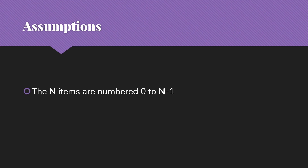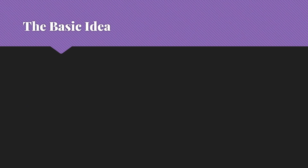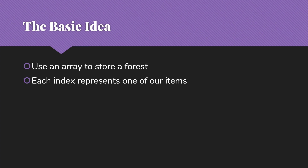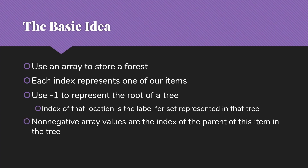We have some assumptions to make in order for this to work efficiently. We're going to have n items numbered from 0 to n-1, and we can determine the number of an item in constant time. The basic idea is that we're going to use an array to store a forest — remember that a forest is just multiple trees. Each index of the array represents one of our items. We use minus 1 as the value at a spot to represent the root of a tree, and the index of that location will be the label for the set. Non-negative array values are the index of the parent of this item in the tree.